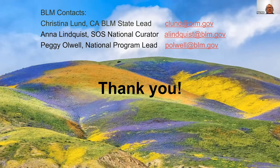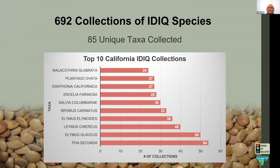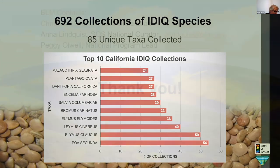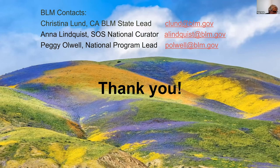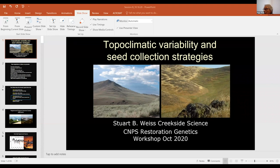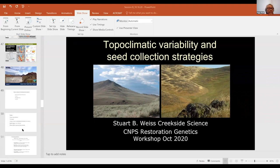85 unique taxa from Seeds of Success collections are currently on the procurement tool. As a next step, it would be great if California developed a step-down seed strategy the way Nevada has done. I would encourage California to work with us to make operational collections available for growers like Hedgerow Farms.